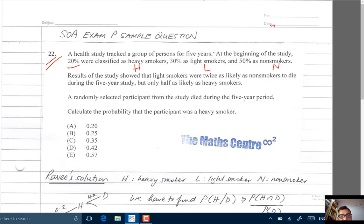Results of the study showed that light smokers were twice as likely as non-smokers to die during the five-year study, but only half as likely as heavy smokers. Again, results of the study showed that light smokers were twice as likely as non-smokers to die during the five-year study, but only half as likely as heavy smokers.